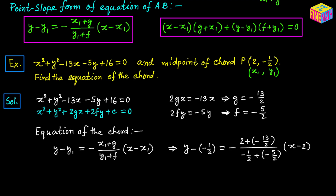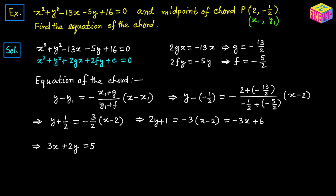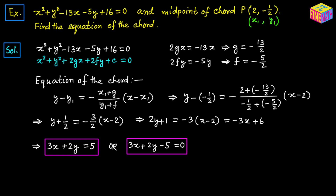Simplifying, the equation becomes y plus 1 half equals negative 3 over 2 times (x minus 2). Multiplying both sides by 2 and simplifying further, the equation finally becomes 3x plus 2y equals 5, which can also be written as 3x plus 2y minus 5 equals 0. Both forms are the same equation and represent the equation of the chord for the given circle.